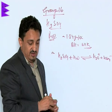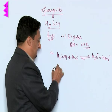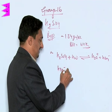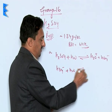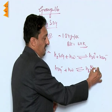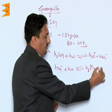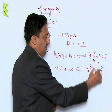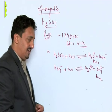Then what we find is this HSO₄⁻ when again is reacted with water it again forms H₃O⁺ and SO₄²⁻. This is dissociation constant first, this is dissociation constant second.